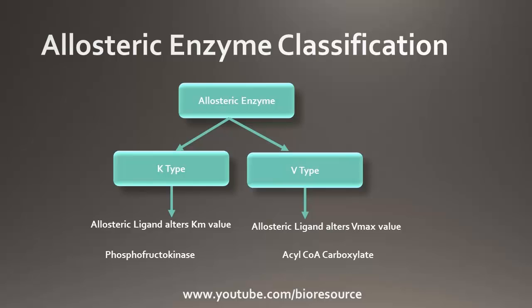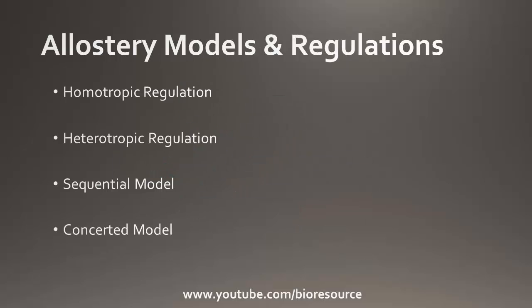An example of K-type is phosphofructokinase, and an example of V-type is acyl-coenzyme A carboxylase. Looking at the allosteric models, there are two different proposed models: the sequential model and the concerted model.